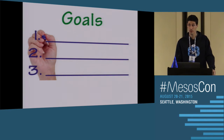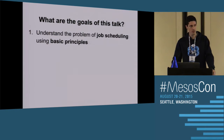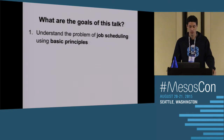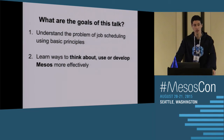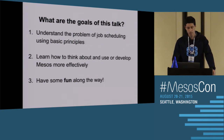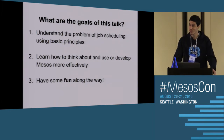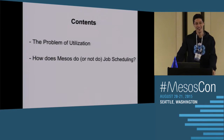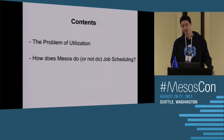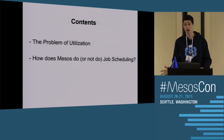So what are the goals of this talk? First, to give you an understanding of the problem of job scheduling using some basic principles — starting from the ground up. Second, to learn some ways to think about, use, or develop Mesos more effectively and have some fun along the way. Really I want to talk about two things: the problem of utilization, and how Mesos does or does not do job scheduling.